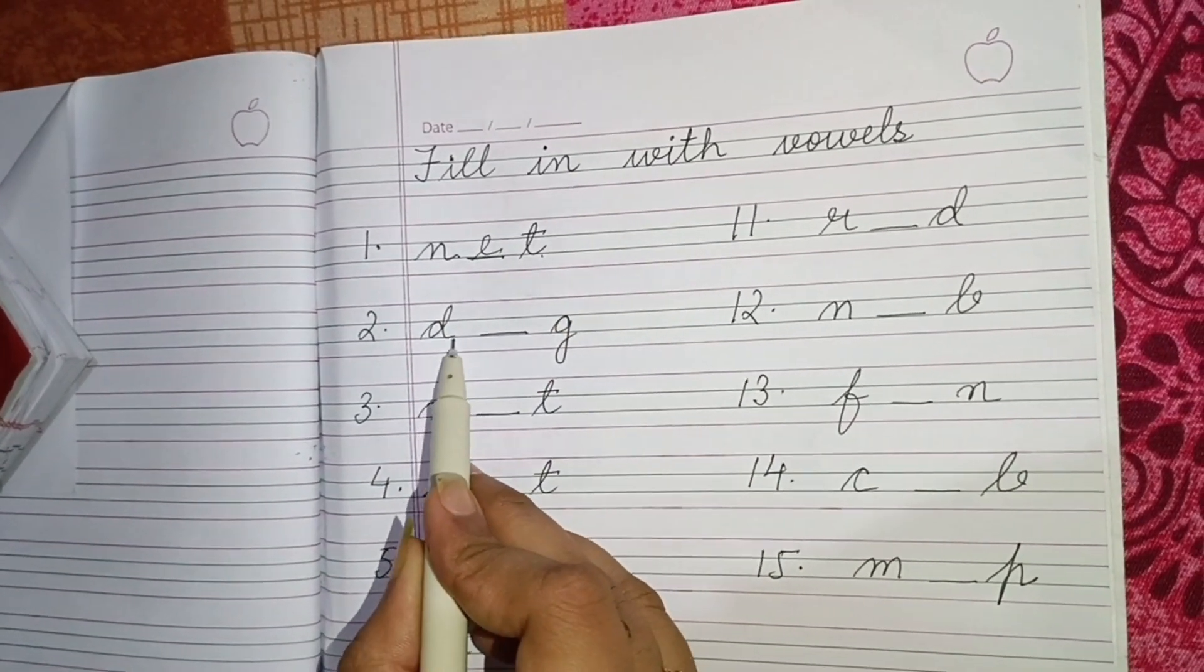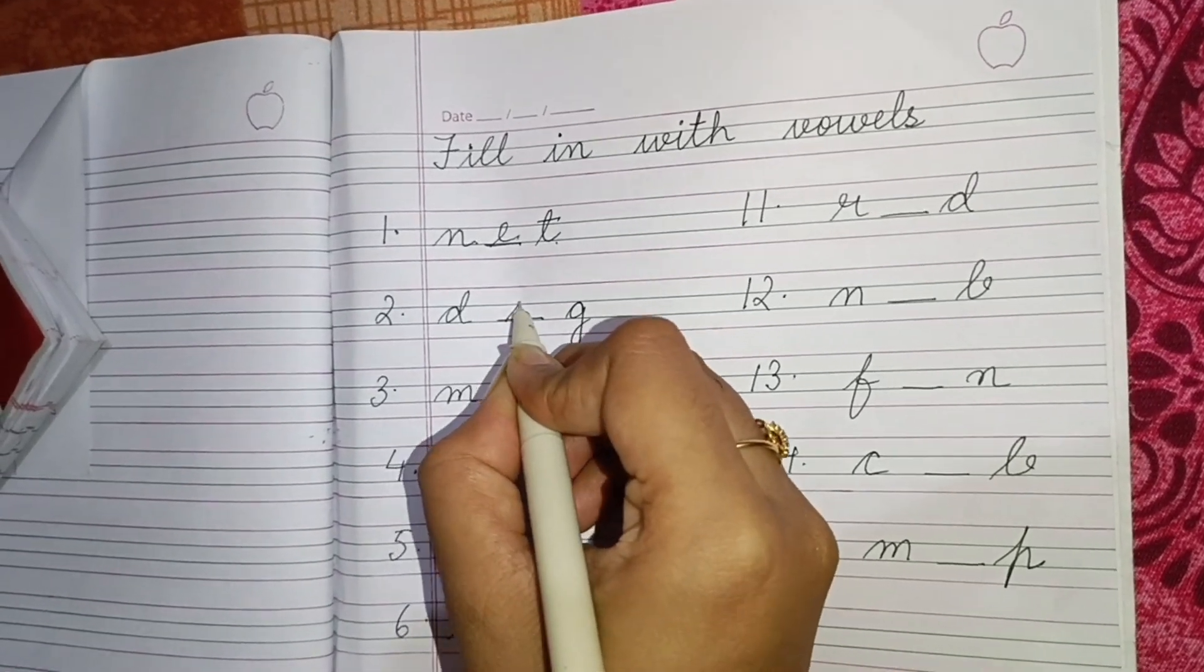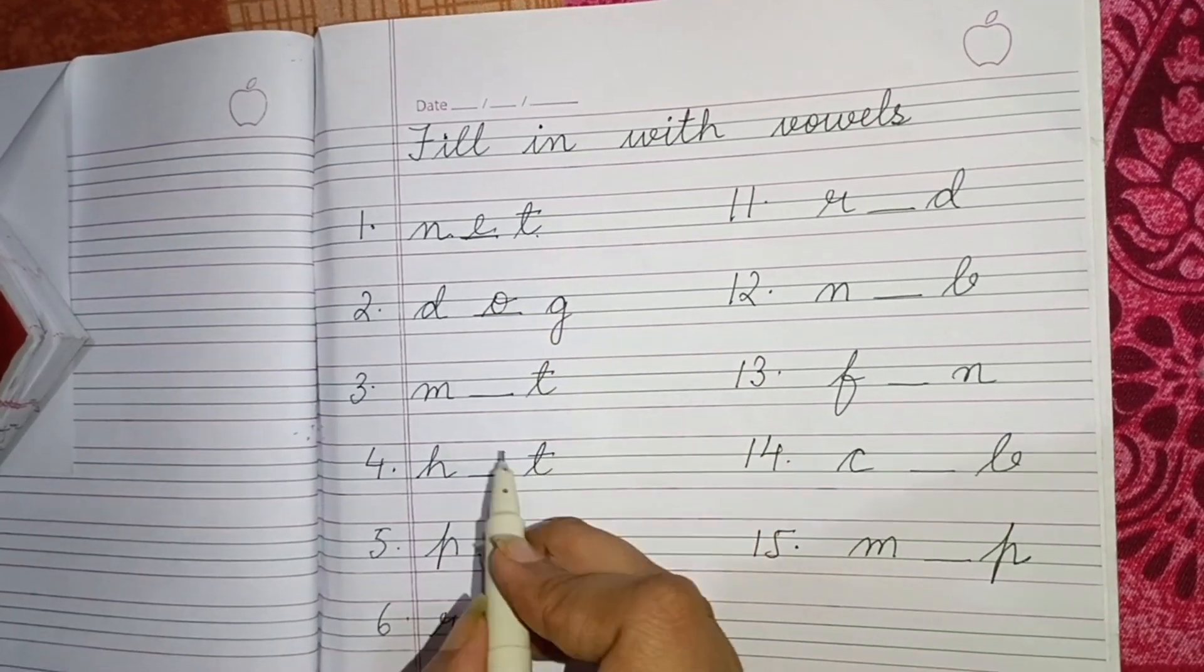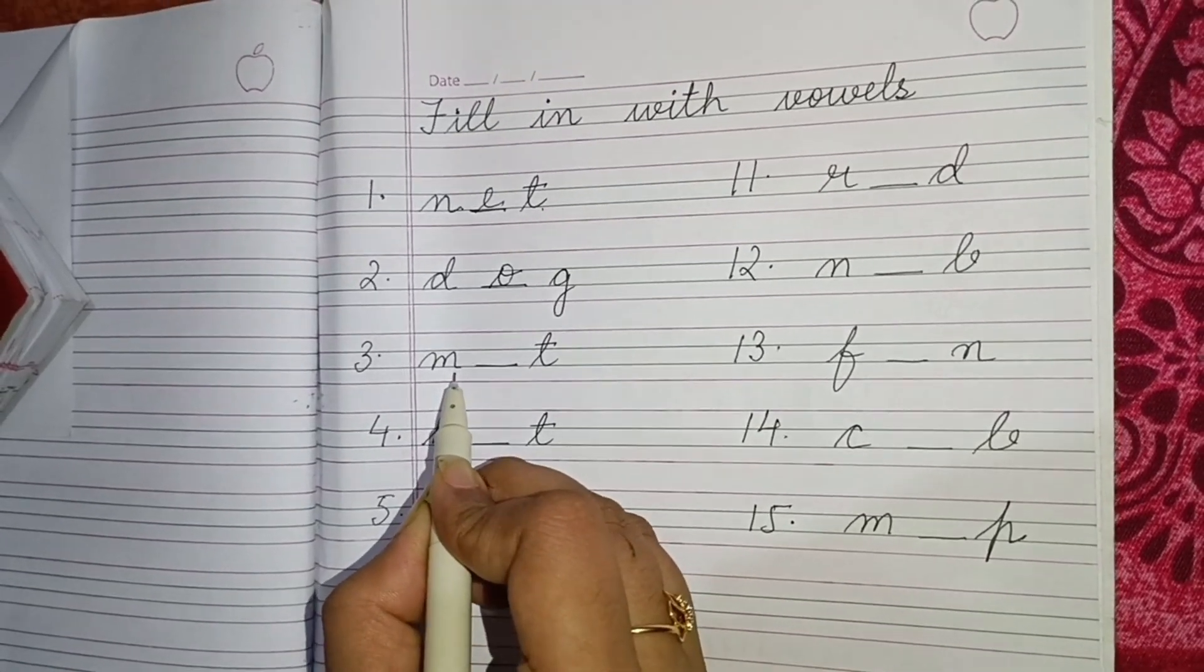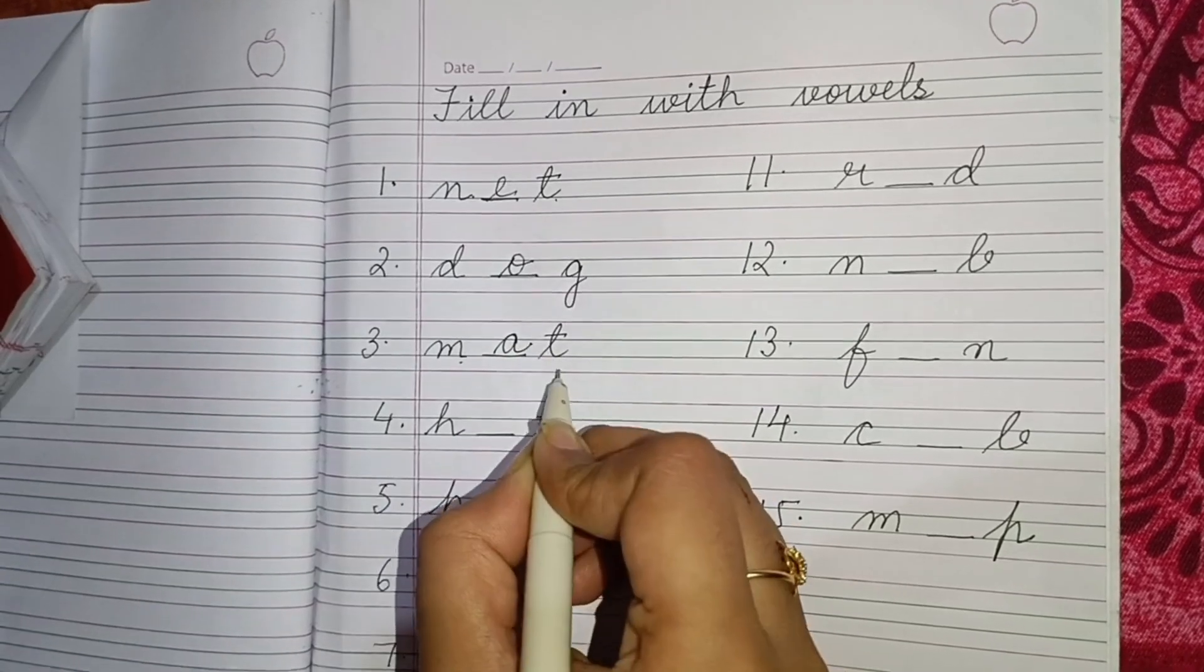Now next is D dash G. So here it will be D O G, dog. Now next is M dash T, means M A T, mat.